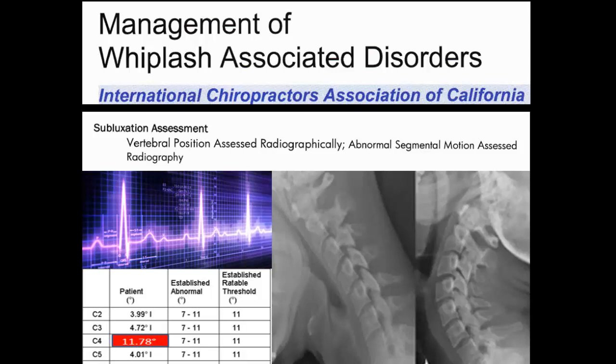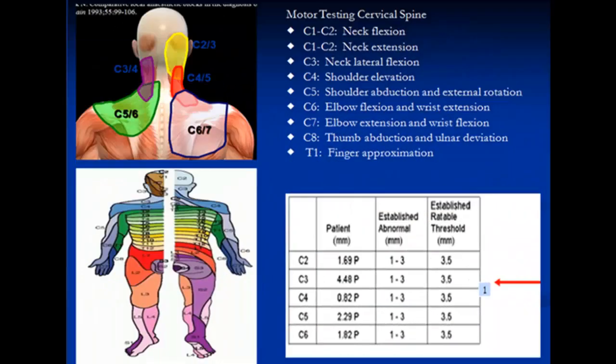Spinal subluxation is defined as spinal misalignment combined with a clinical verification examination to confirm the specific level. At any level where you have abnormal intersegmental motion, if you also have a pain problem, an identified sensory problem, or an identified motor problem at that level, you have a vertebral subluxation complex. Therefore, the most accurate standard way to perform a spinal subluxation assessment is to conduct flexion-extension studies with computerized radiographic mensuration analysis for intersegmental output, then correlate clinically with motor, sensory, or pain pattern problems at that level. Thank you.